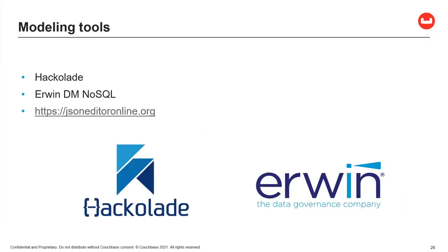To address the concern about changing data without planning, there are tools that help teams stay on the same page about modeling. Hackolate supports Couchbase and many other NoSQL tools. Erwin DM NoSQL also supports Couchbase. Even something as simple as jsoneditoronline.org — free and no-frills — can help with modeling and diffing. It may be worthwhile to put a process and tools in place to help manage the structure of your data.